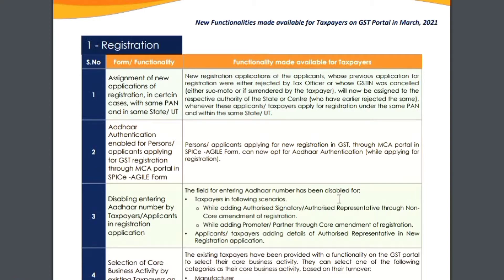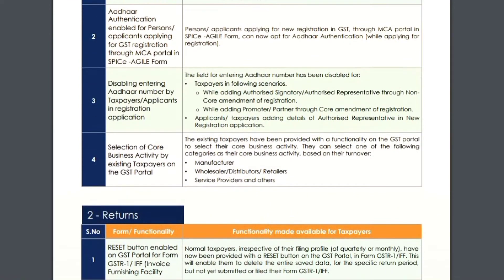Number four talks about the core business activity. As we all know, the GST portal has recently provided a specific option to select your core business activity — the platform on which you are engaged. Whether you are a manufacturer, wholesaler, distributor, retailer, service provider, or fall into a specific category, you need to choose that and get it enrolled on the GST portal. This is to bring specification so the department has information about what platform you work on.